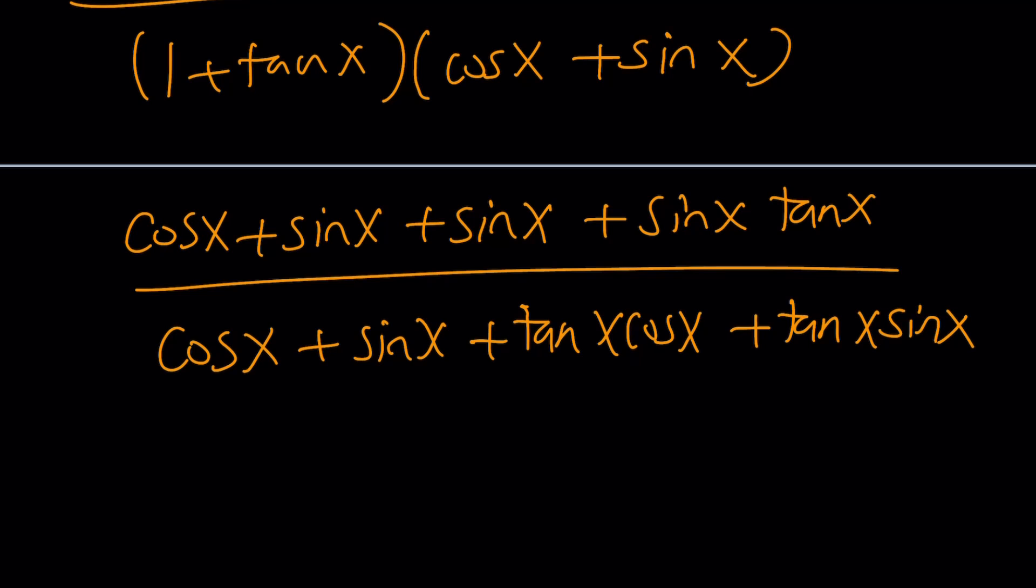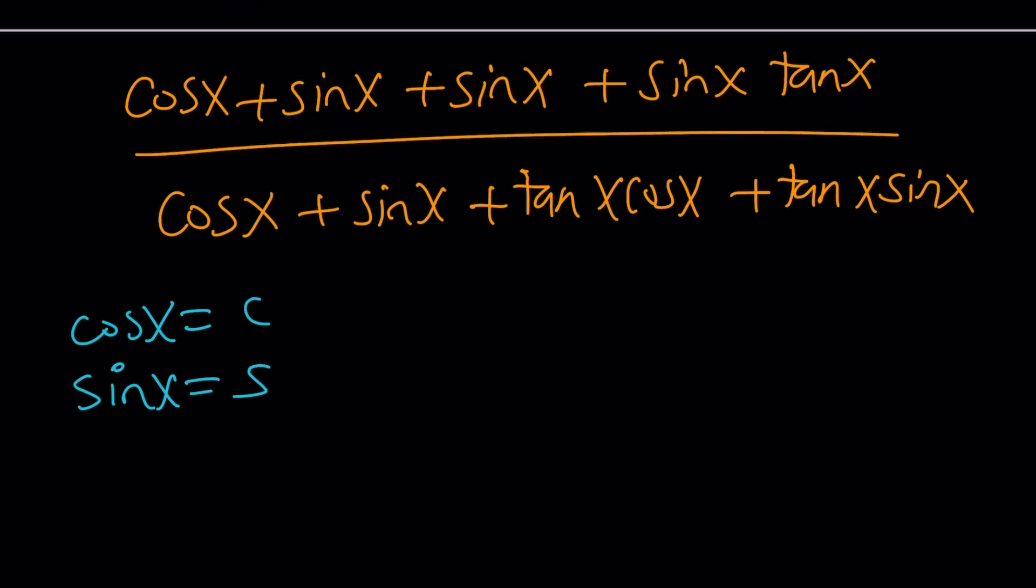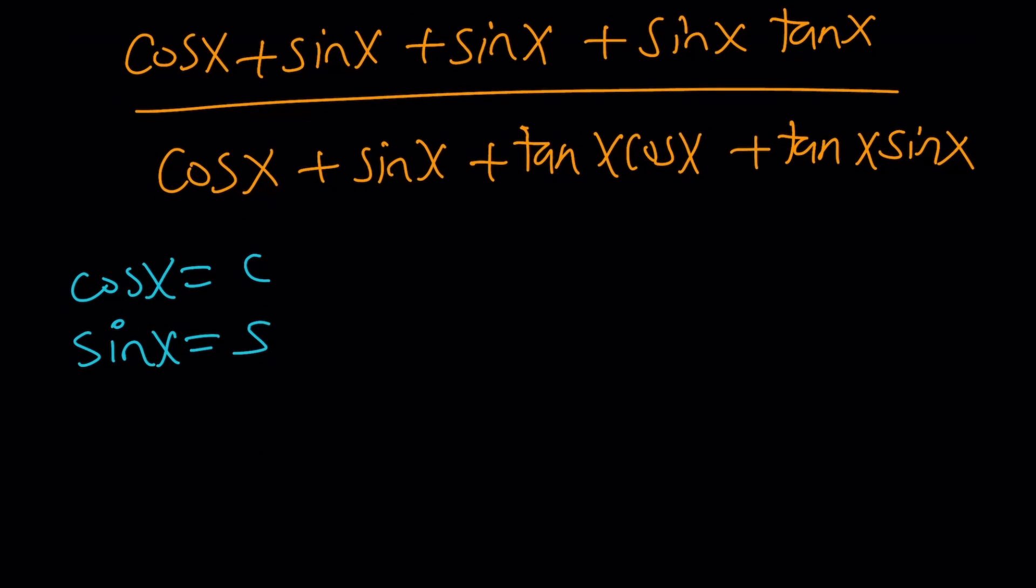We can actually now write the tangent as sine over cosine and then multiply the top and the bottom by cosine. So for simplicity's sake, let's go ahead and use the following convention. Replace cosine x with c and sine x with s. And now we're going to back substitute at the end. And of course, I'm going to replace this with s over c, which is sine over cosine. So we're going to get c plus s. It's 2s, actually. Plus s times s over c.